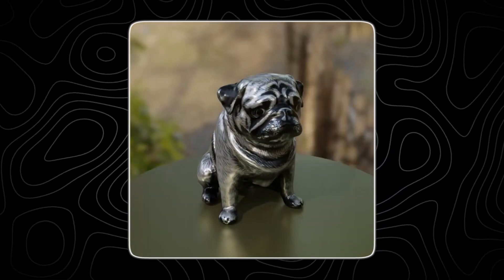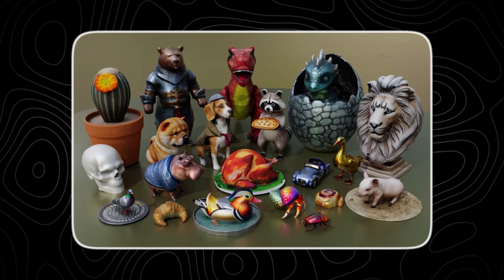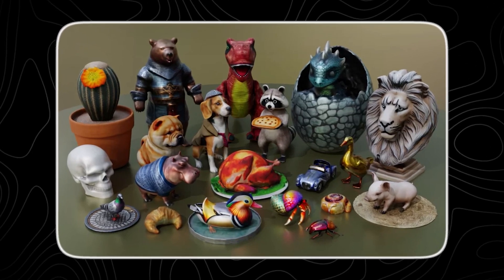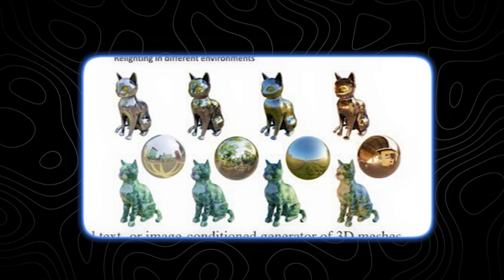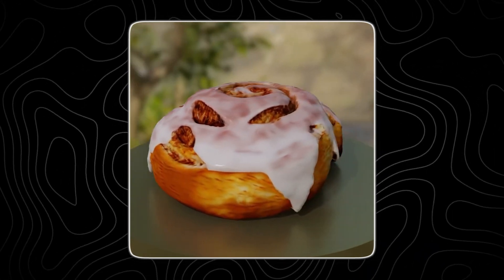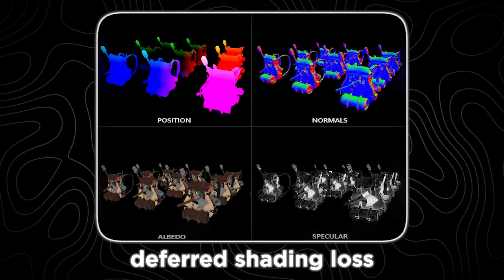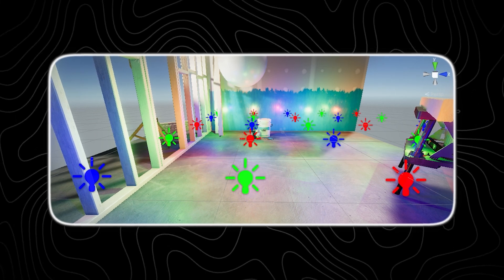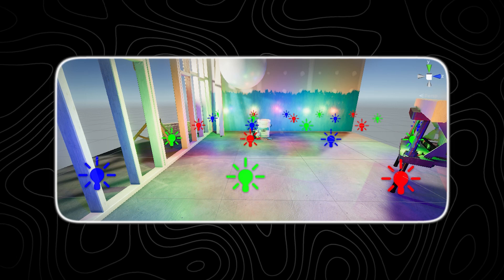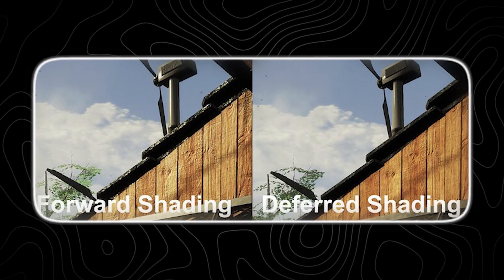Next, the system reconstructs key physical attributes of the object, including its colors, metallicity, and roughness in 3D space. These attributes are crucial for creating realistic models because they affect how the object interacts with light. Metallicity determines how metallic or non-metallic the surface appears, influencing reflections and highlights, while roughness affects the surface texture, dictating how light scatters when it hits the object. To achieve this reconstruction, Meta 3D Gen uses a neural network trained via a method called deferred shading loss. Deferred shading is a technique in computer graphics where the rendering of light and shadow is postponed until after the initial geometry and texture information has been processed. By applying a deferred shading loss, the network learns to accurately recreate the object's appearance in 3D by comparing its predictions to the target appearance under various lighting conditions, ensuring the reconstructed model maintains high fidelity to the original object.